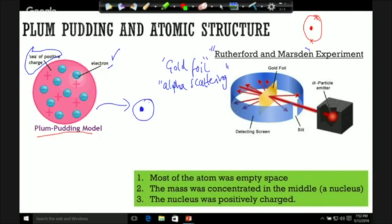These are the three things that they found, and then we'll explain why using this diagram. Rutherford and Marsden found out that most of the atom was empty space. So most of it is just empty space. That the mass was concentrated in the middle. And that the nucleus was positively charged.